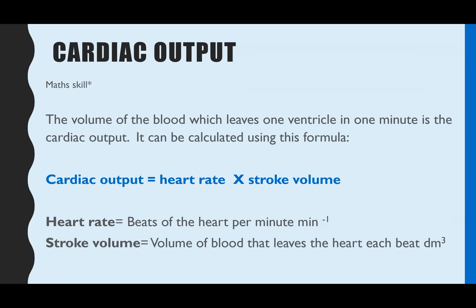Cardiac output is a maths skill linked to this. It is the volume of blood leaving one ventricle in one minute. The formula is: cardiac output = heart rate × stroke volume. Heart rate is how many times your heart beats per minute, and stroke volume is the volume of blood leaving the heart every beat.